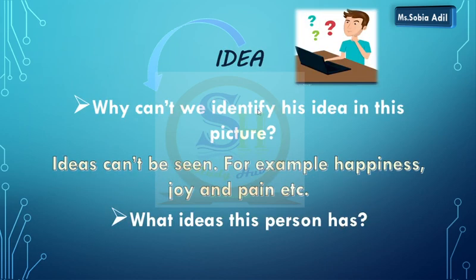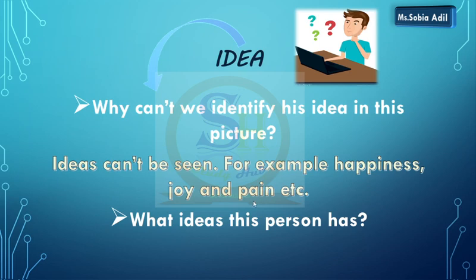Idea — why can't we identify a person's idea in a picture? Ab hume nahi pata ki unke mind mein kya hai — his feelings. Hum unki feelings nahi samajh sakte, so hum un feelings ko name dete hain, like happiness, joy. Ideas cannot be seen — for example, happiness, joy and pain. These are abstract — jinko hum touch nahi kar sakte. Hum dekh nahi sakte. Happiness, joy and pain are the names we use for those ideas.